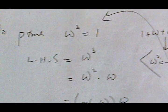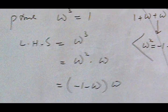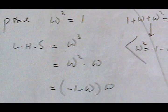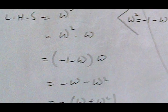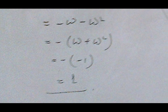The second part of this question is to prove that ω³ = 1. We break it as ω² · ω, and since ω² = (-1 - ω) from the property, we multiply inside, take -1 common. Since the roots satisfy the equation this gives (-1)(-1) = 1, so ω³ = 1 is proved.